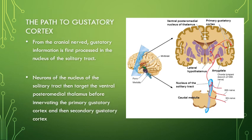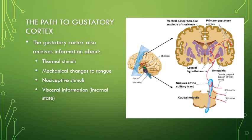Despite three different pathways, all three cranial nerves converge in the nucleus of the solitary tract in the brainstem. From there, information passes to the ventral posteromedial thalamus and then on to the primary and secondary gustatory cortex. This pathway carries not just taste but also somatosensory information from the tongue — including temperature, mechanical changes, and pain.